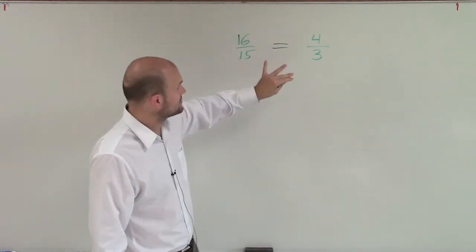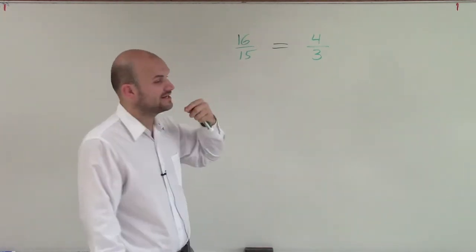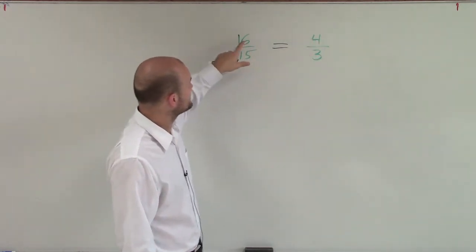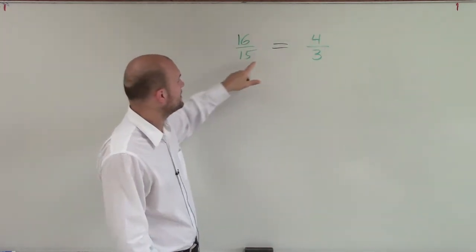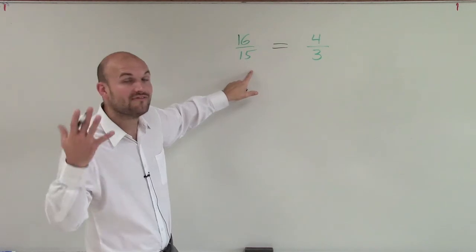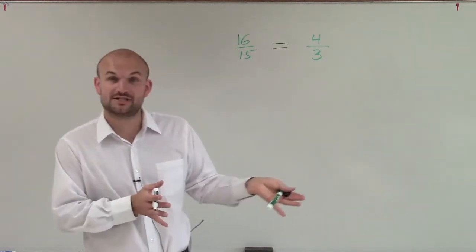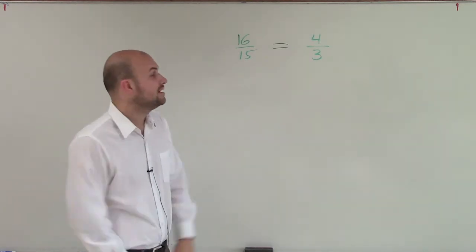Now, on a problem like this, there's a couple ways we could look at this and determine if they are equivalent. Well, I know that 4 divides into 16 four times, but 3 only divides into 15 five times. So therefore, automatically, I know that I'm not multiplying by the same ratio, so they're not going to be equivalent.